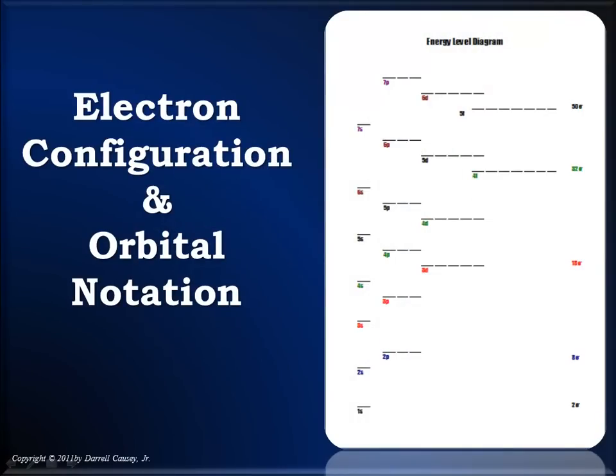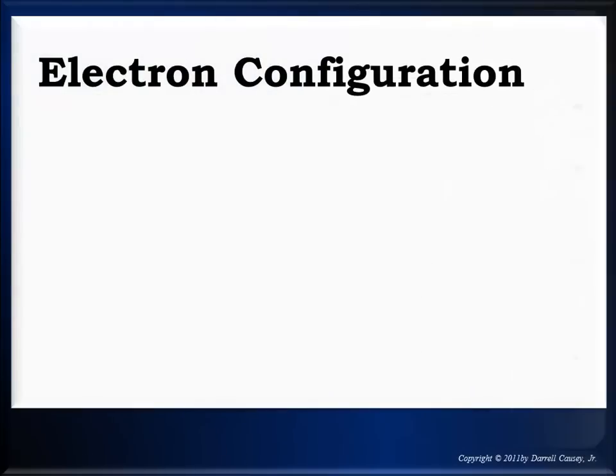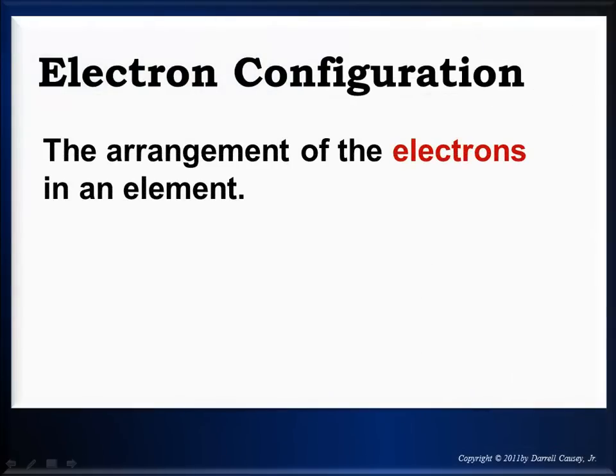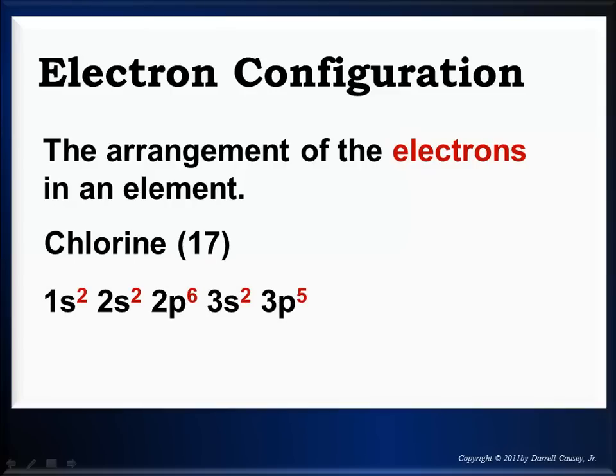Electron configurations and orbital notations. First of all let's look at the difference. Electron configurations deal with the arrangement of the electrons in the atom. So we're interested in how they're placed and it's more of a numerical representation. If I had chlorine let's say with 17 electrons, then I would look at it and it would be placed like this: 1s2, 2s2, 2p6, 3s2 and 3p5.